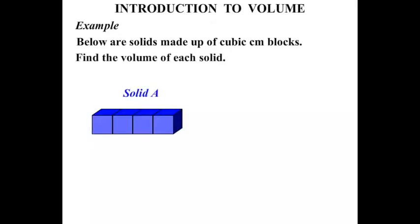Below are solids made up of cubic centimeter blocks. There we have Solid A. We are asked to find the volume of each solid. Well, pretty straightforward actually. 1, 2, 3, 4, just a matter of counting them. So we say that Solid A has a volume of 4 cm³.